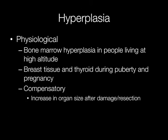Hyperplasia may be physiological. For example, people living at high altitude will have increased numbers of red blood cells due to hyperplasia of the red blood cell precursor cells in the bone marrow. Breast and thyroid tissue also become hyperplastic during puberty and pregnancy.